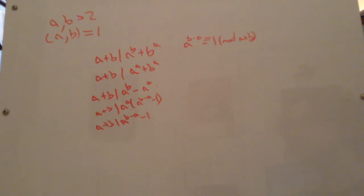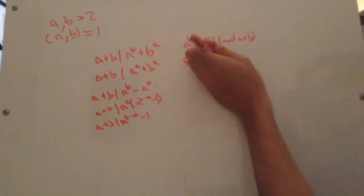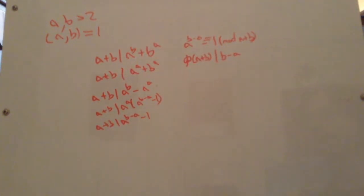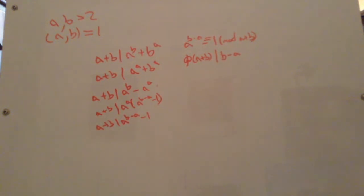So, now we can use Euler's totient theorem. We're going to use the totient function of a plus b divides b minus a, because a and a plus b are relatively prime, so if this is going to be 1, b minus a must be divisible by that totient function.